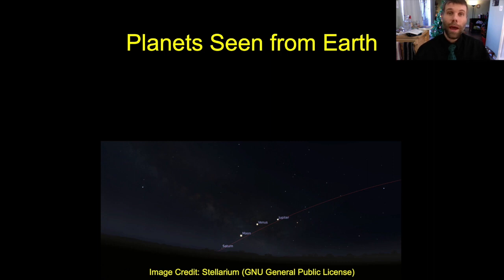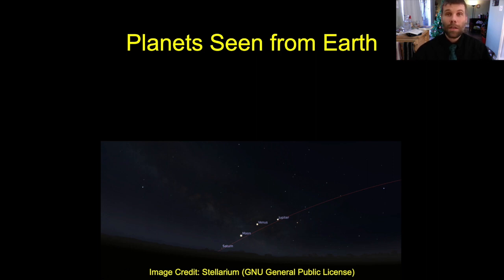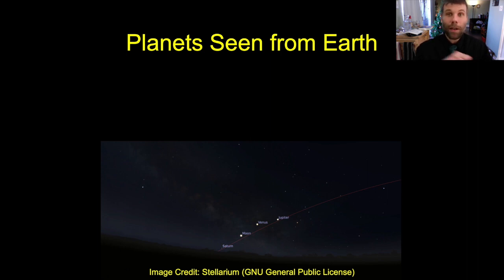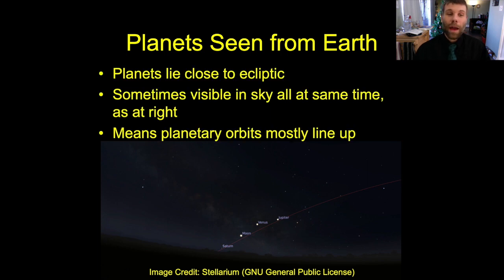We can also look at the planets from the Earth, and we notice another important feature of the solar system that we're going to have to explain whenever we develop a hypothesis of planet formation. If you look across the bottom of the slide, you'll see an image from the planetarium simulator Stellarium showing three of the planets — four if you count the Earth — plus the Moon, and all four of those in the sky line up nicely along a red curve. That red curve marks the ecliptic, and this is always true for planets. Any planet you find in the sky is going to be found on or very near to the ecliptic path.